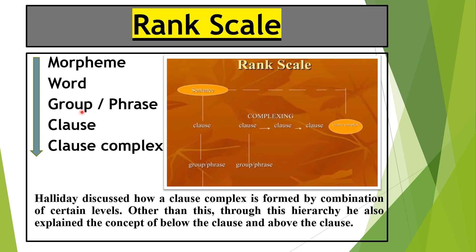According to Halliday, we have different groups like nominal group, whereas in traditional grammar we used noun phrase, verbal phrase, prepositional phrases. Then we have clause, and after clause we have clause complex. If you look at this rank scale, with group or phrases we have clause, and according to traditional grammar, after that we have sentences. But sentence is structurally almost the same as clause complex. According to Halliday, sentence is a unit of orthography, not a grammar or semantics unit, and we cannot do analysis — whether written or spoken language — so we need to use clause complex.